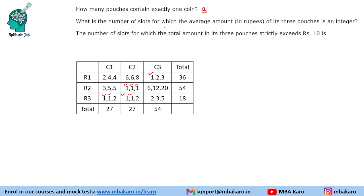The third question: what is the number of slots for which the average amount of its three pouches is an integer? A slot means one cell in the grid. We take the totals and check if they are multiples of three. Looking at the totals — 20, 6, 13, 3, 38, 4, 4, 10 — there are only two such slots where the average is an integer.